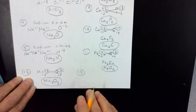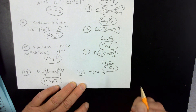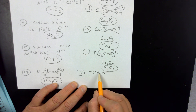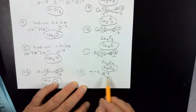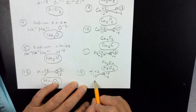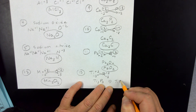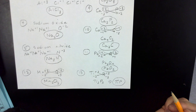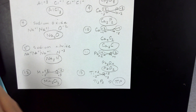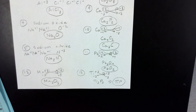The last example is Ti plus three and P minus three. Crisscross drop and swap gives a plus three on the phosphorus and a minus three on the titanium. Dropping all charges, we have Ti₃P₃. But a three to three ratio is really one to one, so this formula reduces to TiP. These were some examples of how to write ionic compound formulas given the name and given the ions. We'll see you back in the classroom.